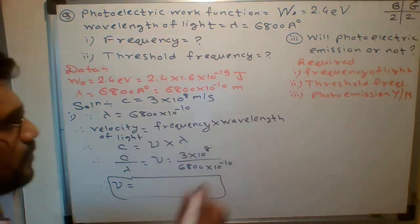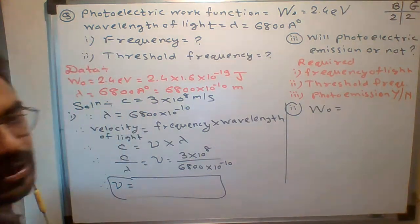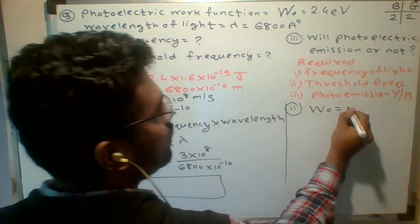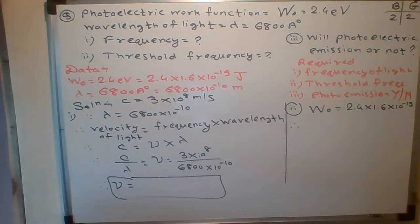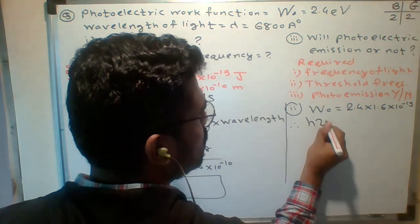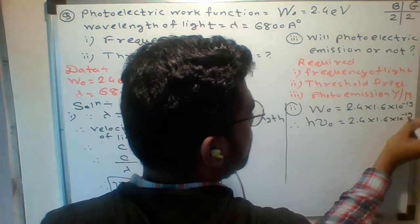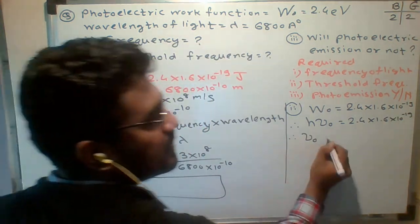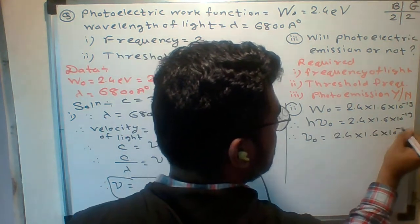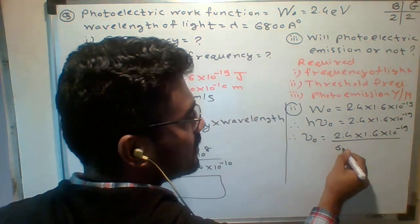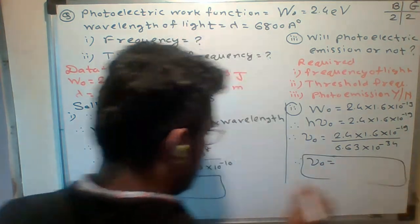Now let's find the threshold frequency. W naught is given as 2.4 multiplied by 1.6 into 10 to the minus 19 joules. The formula for threshold frequency ν naught is: ν naught equals W naught divided by h, where h is Planck's constant 6.63 into 10 to the minus 34. So ν naught equals 2.4 into 1.6 into 10 to the minus 19, divided by 6.63 into 10 to the minus 34.